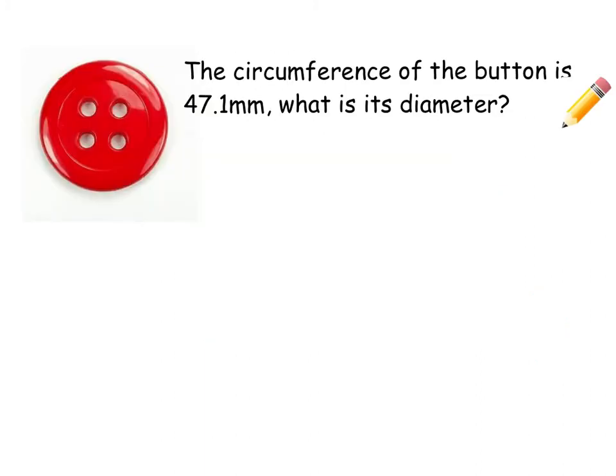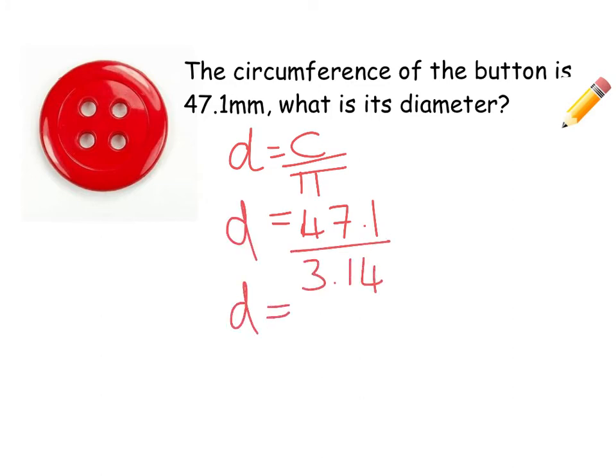So the circumference of this button is 47.1 millimeters. What is its diameter? Remember, we're using the formula diameter equals circumference divided by π. So our circumference goes on the top, 3.14 on the bottom. We're not going to have lovely answers for all of these. This one does though because I've worked it out nicely. This gives us a diameter of 15 millimeters. And when you actually go to buy buttons, you buy them based on what the diameter is. So this would be a 15 millimeter button.